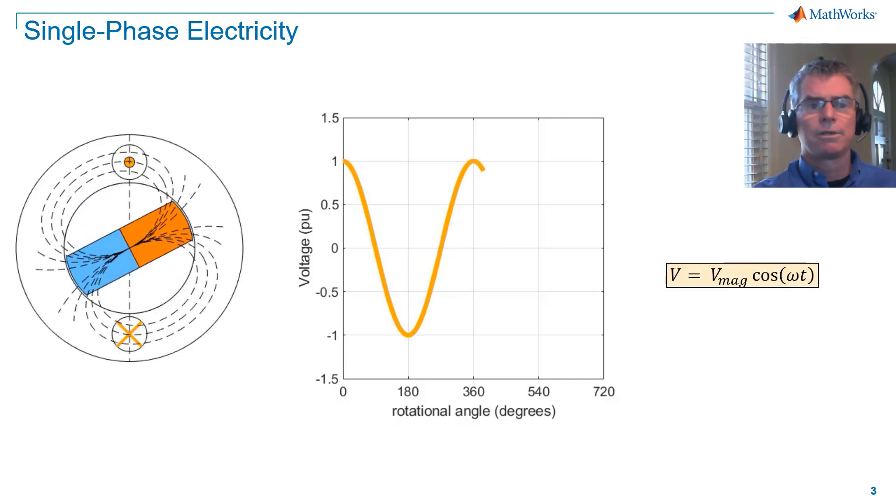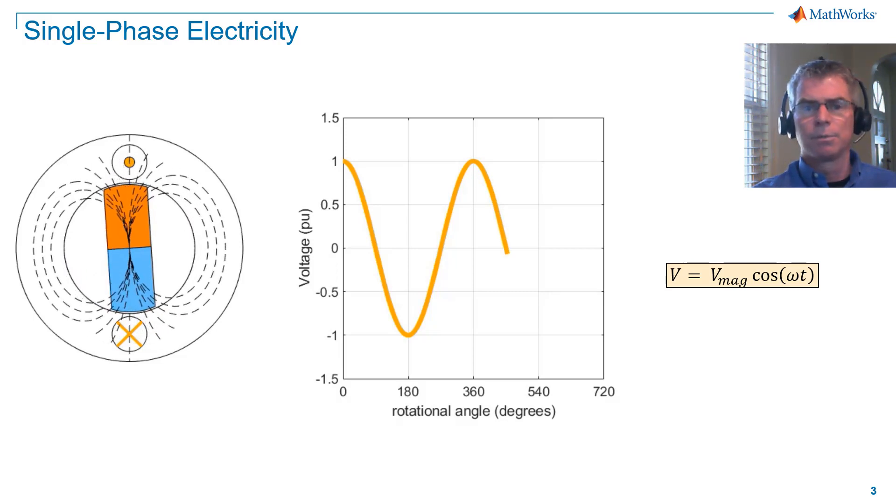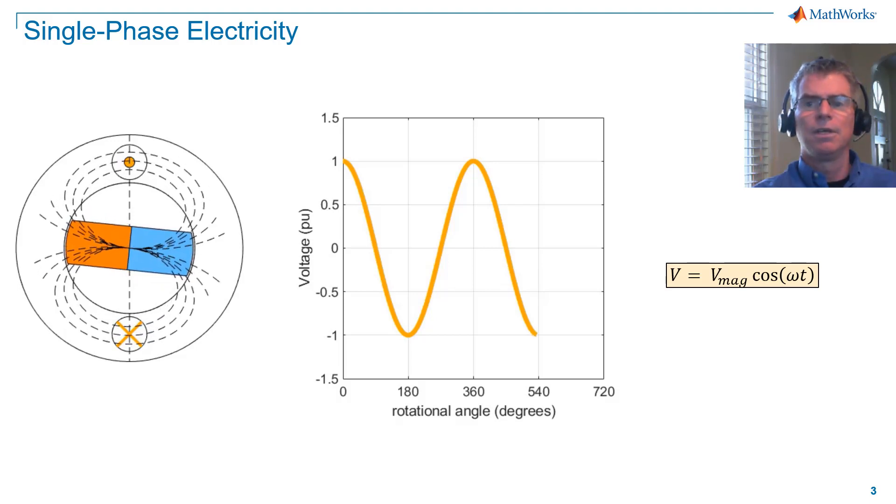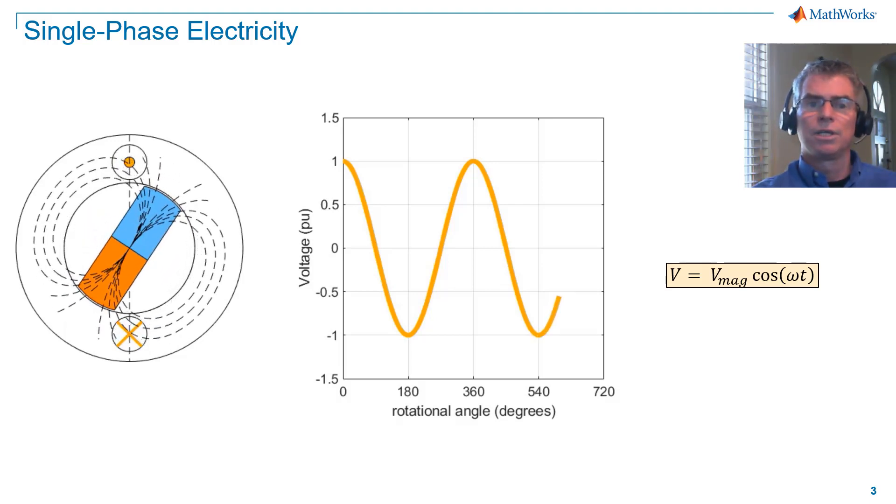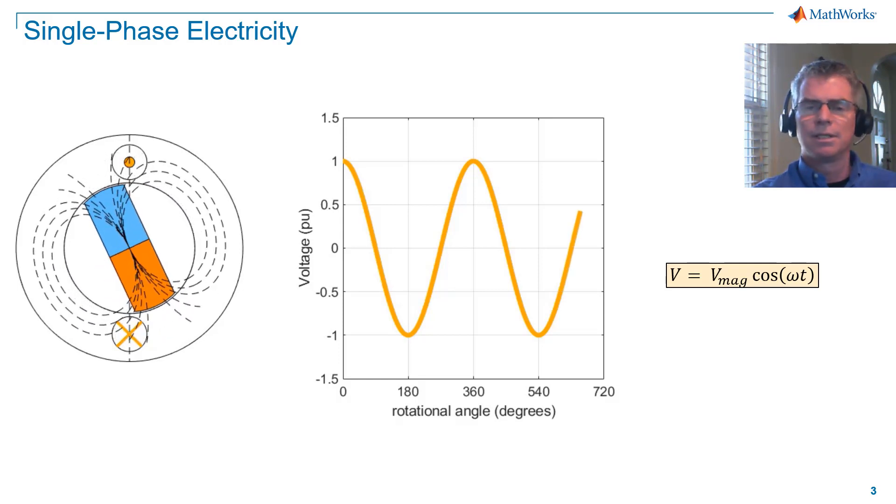In trigonometric form, the voltage is described as V equals V mag multiplied by cosine omega t, where V is instantaneous voltage, V mag is the peak magnitude of voltage, omega is rotational frequency in radians per second, and t is time in seconds.